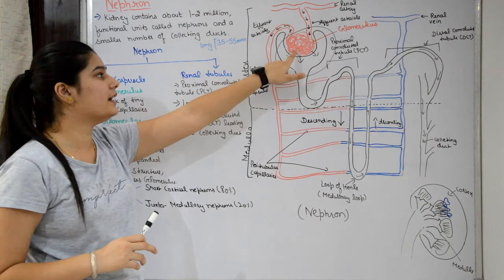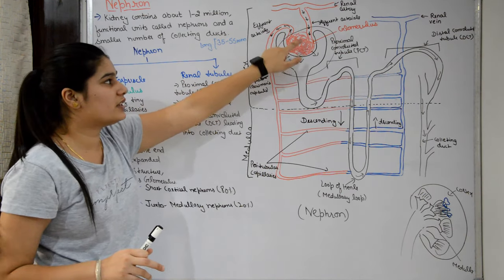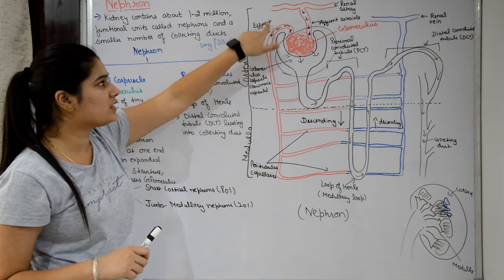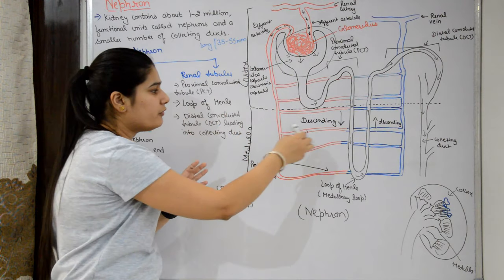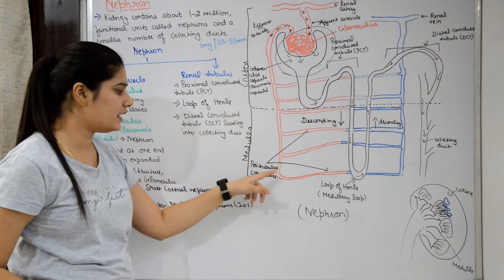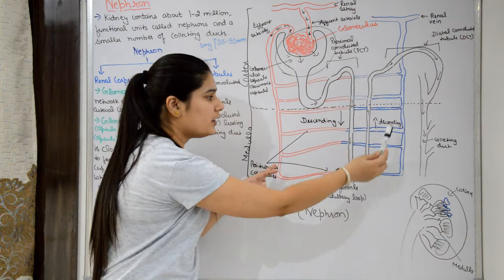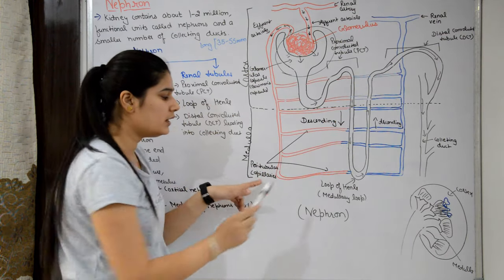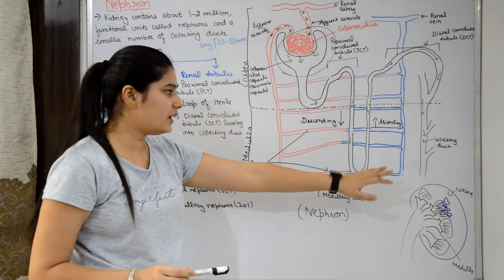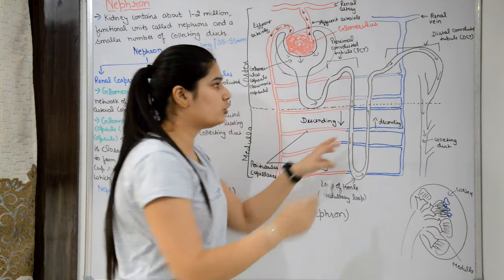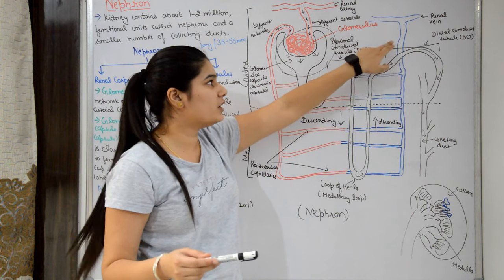The renal artery brings blood supply to the nephron and first divides into afferent arterioles, forming the glomerulus — a network of capillaries. Blood exits the glomerulus through the efferent arteriole, which carries filtered blood and further divides into peritubular capillaries. These peritubular capillaries surround the tubules of the nephron. They eventually merge into veins and then into the renal vein, which carries clean blood to the inferior vena cava.